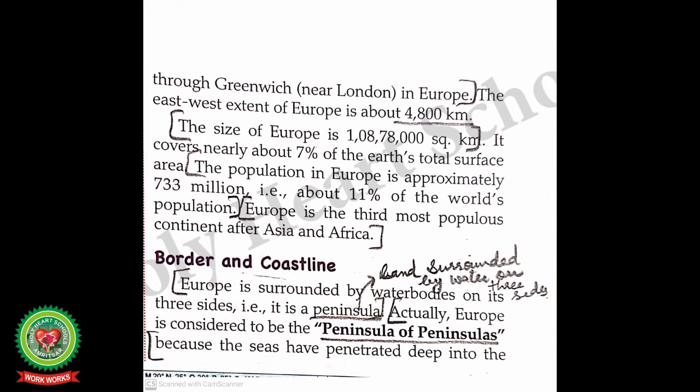The east-west extent of Europe is about 4,800 kilometers. The size of Europe is 1 crore 8 lakh 78,000 square kilometers, covering nearly about 7 percent of the earth's total surface area. The population of Europe is approximately 733 million, which is about 11 percent of the world's population. Europe is the third most populous continent after Asia and Africa.